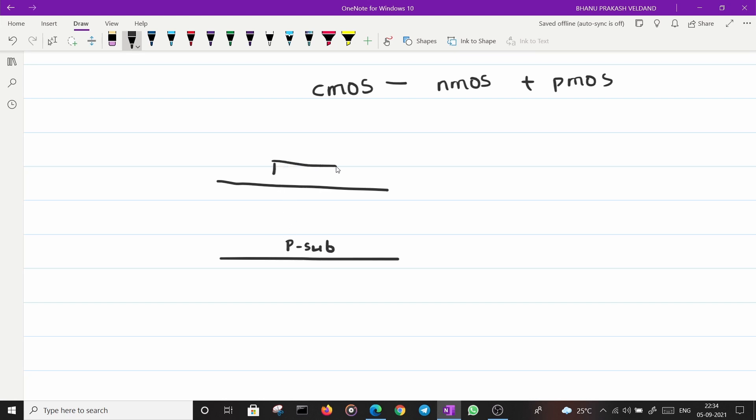So a wafer starts with this which has a P substrate or a P type semiconductor which is called as P substrate. Then you have a polysilicon which acts as a gate. There is an insulating layer between the polysilicon and the substrate so that there is no conduction between the gate and the substrate. Then you dope two N plus regions. One of them acts as a drain the other acts as a source.